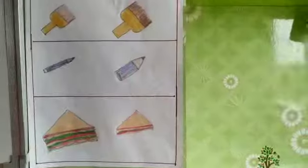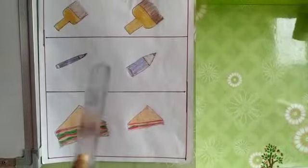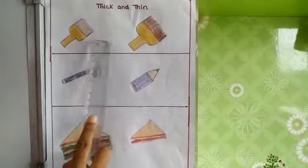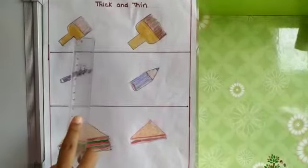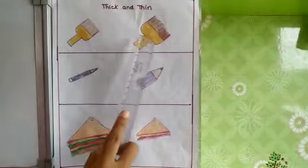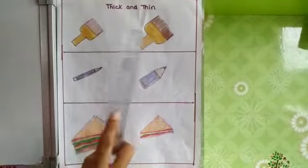More examples I will show you. Now look at the picture. Can you see two brush, paint brush. So here this one is the thick paint brush and a thin paint brush. And this is a thick one.